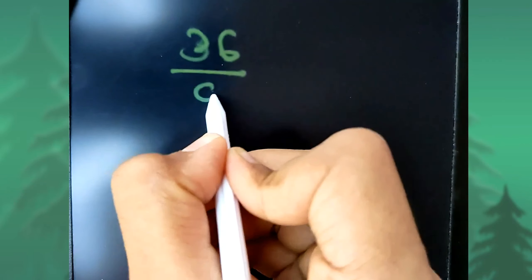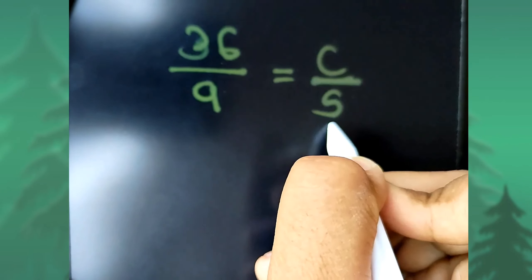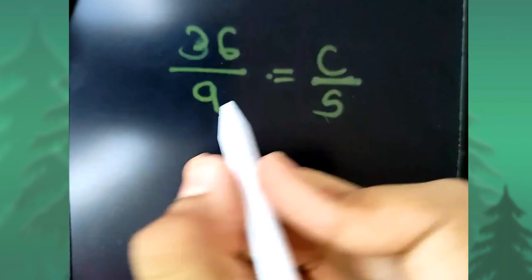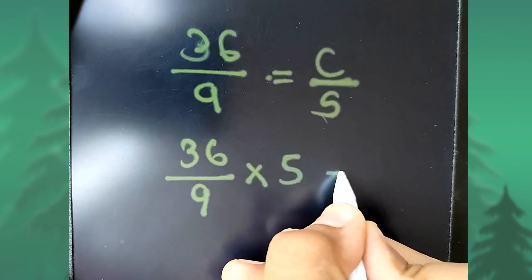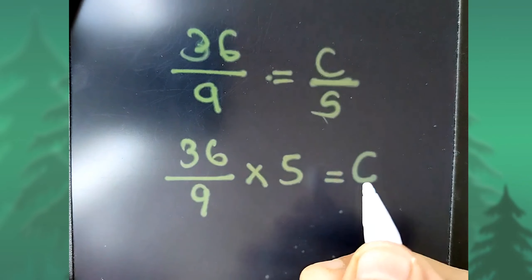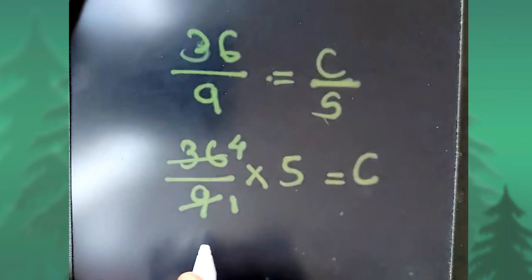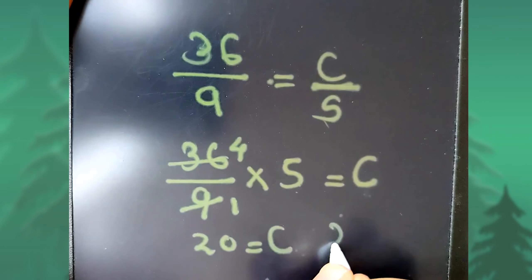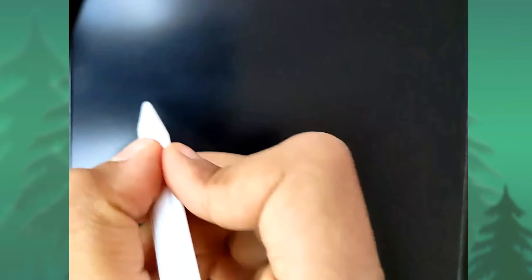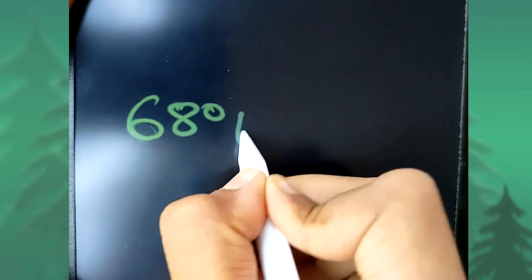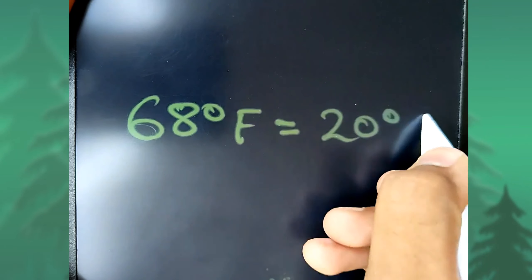So 36 / 9 = C / 5. Since it is division on one side, when we move the 5 across it becomes multiplication: (36 / 9) × 5 = C. Now, 9 fours are 36, so 36 / 9 = 4, and 4 × 5 = 20. So C = 20 degree Celsius. Therefore, 68 degree Fahrenheit equals 20 degree Celsius.